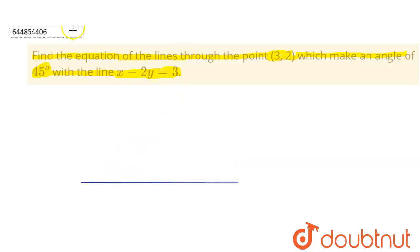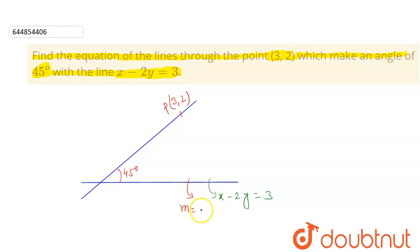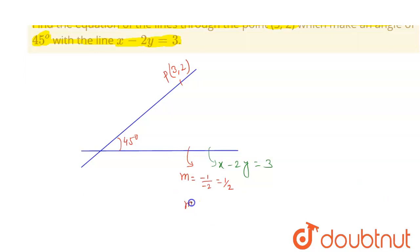We have the given line whose equation is x minus 2y equals 3. We need to find a line which passes through (3, 2) and makes an angle of 45 degrees with this line. The slope of the given line m1 will be minus 1 divided by minus 2, which means m1 equals one-half.